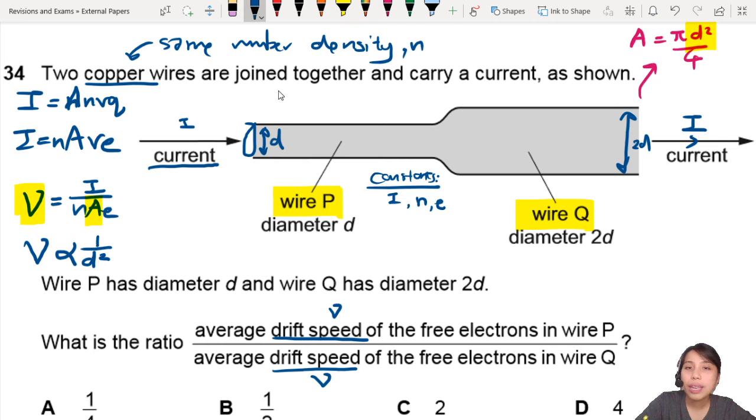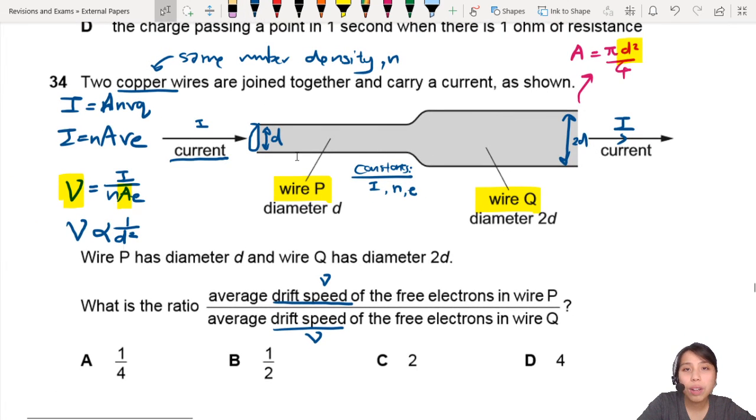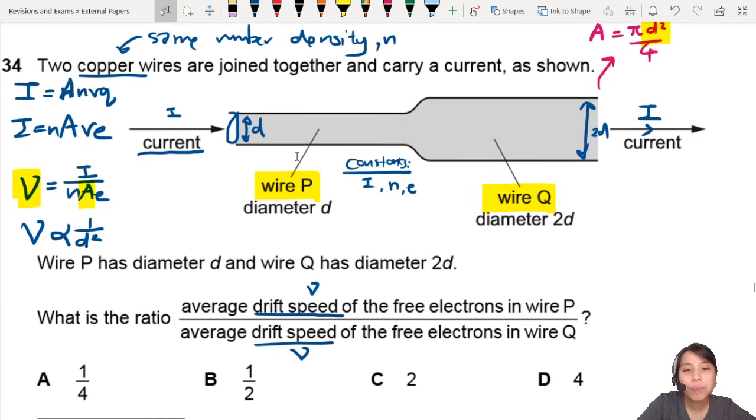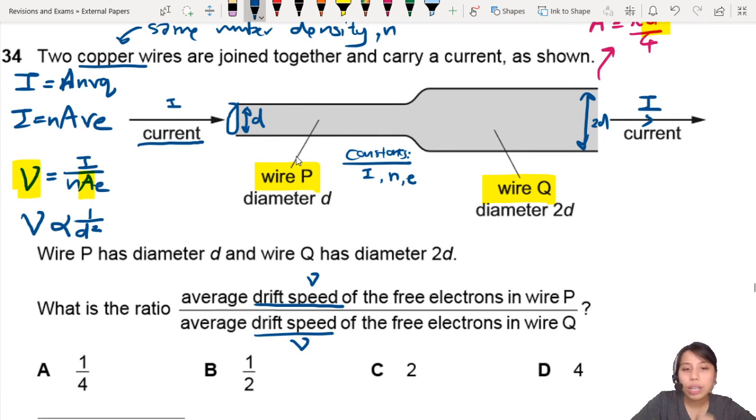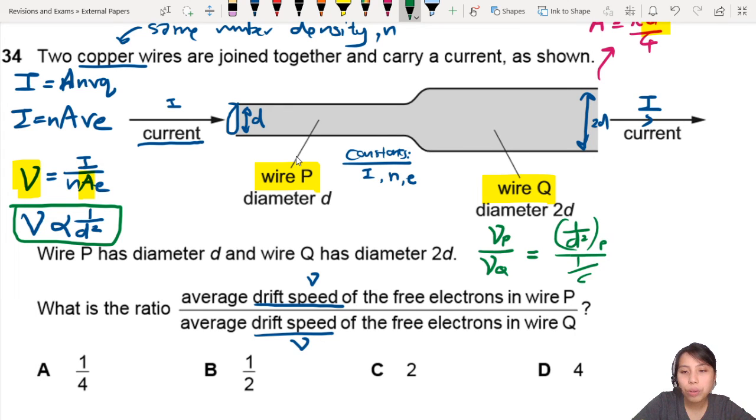Now that you have an equation for the drift velocity, you can do your ratio. You are dividing drift speed over drift speed. Drift speed in P over drift speed in Q equals. Now we use what we have discovered earlier, the ratio. So 1 over D squared for P and 1 over D squared for Q. If I rearrange this a bit, this would be D squared Q over D squared P.